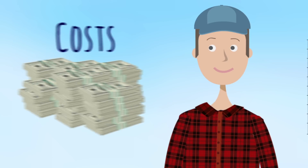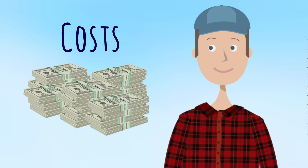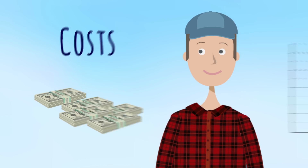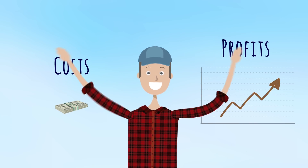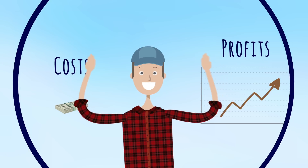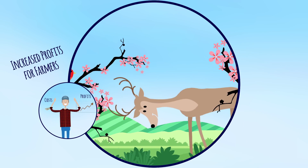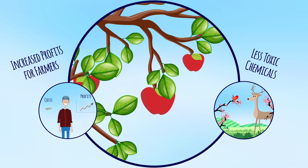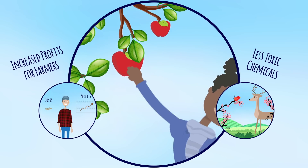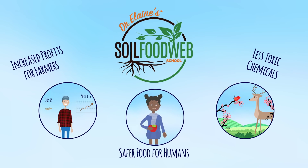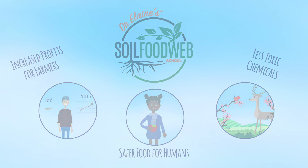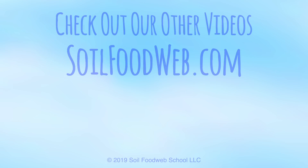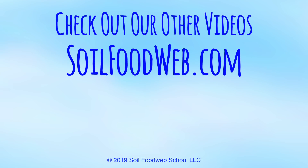For farmers, the benefits include reduced costs and increased profits, as they no longer need to spray weed killers. For the environment, this means less toxic chemicals are being used. For humans, it means safer food. For more information about the numerous benefits of the soil food web, and how you can get involved, visit SoilFoodWeb.com.